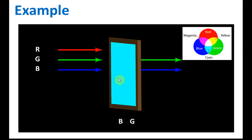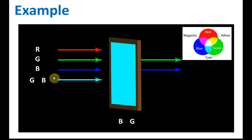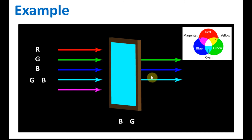If the three primary colors move towards the cyan filter, the blue and green are allowed to pass through because cyan is the combination of blue and green. If cyan color light moves towards the filter — cyan is a combination of green and blue — both are allowed to pass through, so the light that comes out is also cyan.